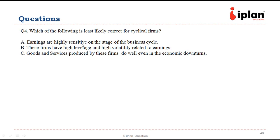Question number four asks which of the following is least likely correct. For cyclical firms, earnings are highly sensitive to the stages of the business cycle — that is correct. These firms also have high leverage and high volatility related to earnings — this is also true, as these companies will most likely have high leverage and high volatility because of the business cycle.